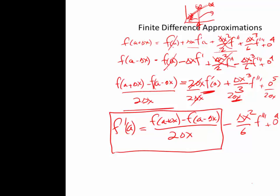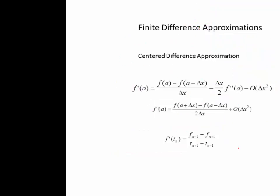What we can see from all of this is that the first error term for the centered difference is proportional to delta x squared. That's different from the forward and backwards differences. What this means is that when we cut delta x by half, the error is cut in half for forward and backwards, but it's cut to one quarter for the centered difference because it's proportional to delta x squared. So the centered difference is second-order accurate, which is a significant advantage.